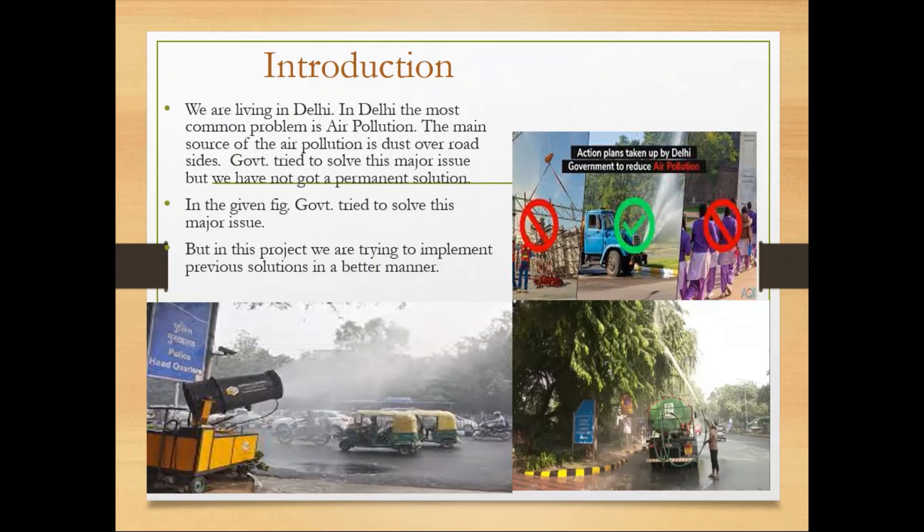As you can see, the government uses a water spray method to avoid the movement of dust particles. As we notice every day, there is dust layered on the road, and when a vehicle crosses over it or when strong wind forces allow their movement, it results in problems like bronchitis, asthma, or lung cancer.